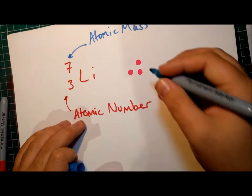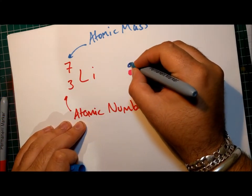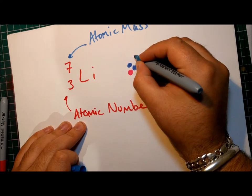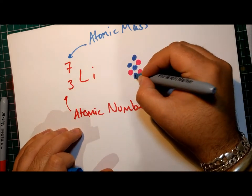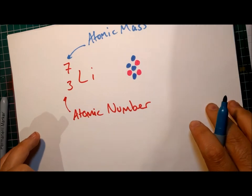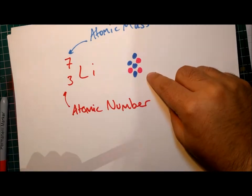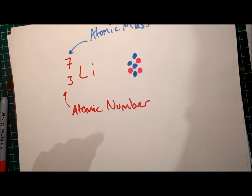Well, 4. So 1, 2, 3, 4, 5, 6, 7. So this is what the nucleus of a lithium looks like: 3 protons and 4 neutrons.